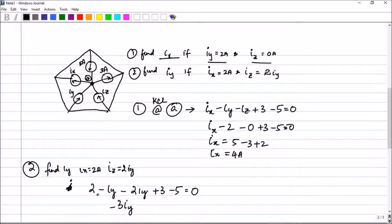This is equal to 0 here. So you get 5, 5, 5 minus 5 equal to 0. This will be equal to 0. Therefore, Iy is equal to 0.